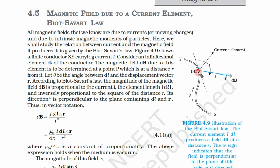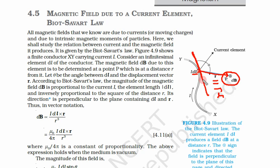We have this very small current carrying element DL and we want to know the magnetic field at point P, which is at a distance R. The direction of R is given by the unit vector R̂. If you draw a line on this current carrying element, it makes angle theta with R. So let theta be the angle between DL and the displacement vector R.